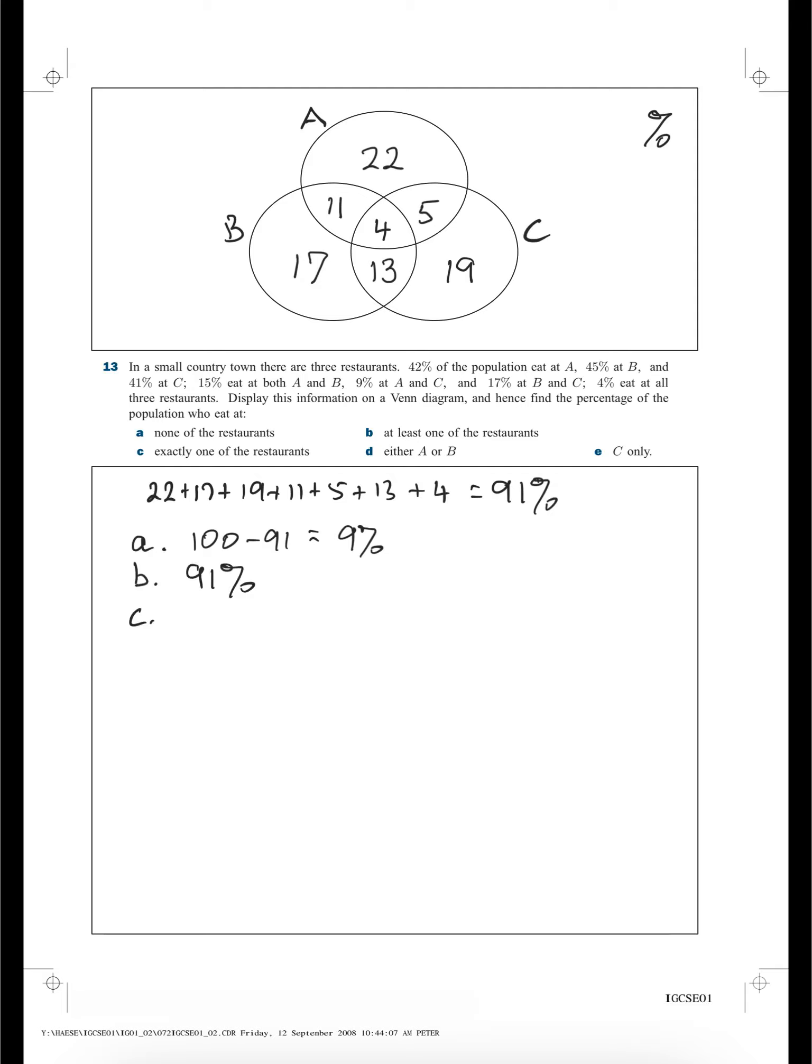C, exactly one of the restaurants. Well, exactly one of the restaurants is going to be that 17, that 22, plus that 19. So that's 17, plus 22, plus 19. And so that's 19 and 22, that's 41, and 17 is 58%.